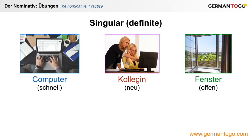So der, die, and das are the articles, and you just add an -e to the adjective. Der schnelle Computer. Die neue Kollegin. Das offene Fenster.